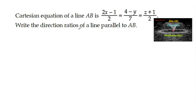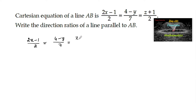The Cartesian equation of a line AB is (2x-1)/2 = (4-y)/7 = (z+1)/2. We need to find the direction ratios of a line which is parallel to AB.